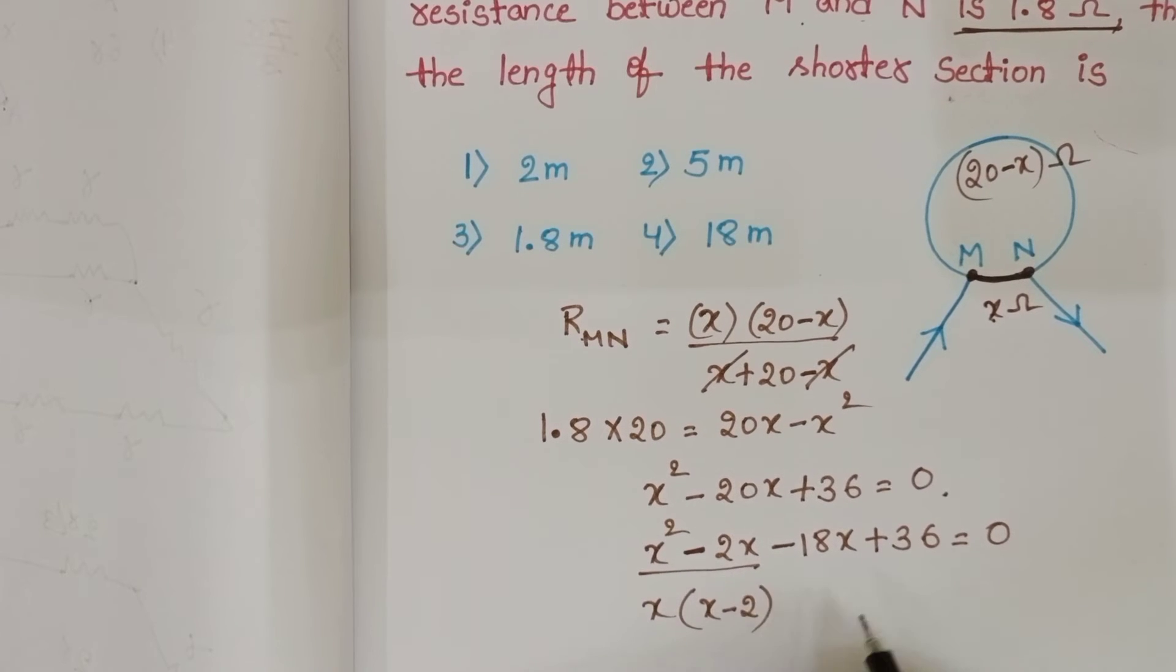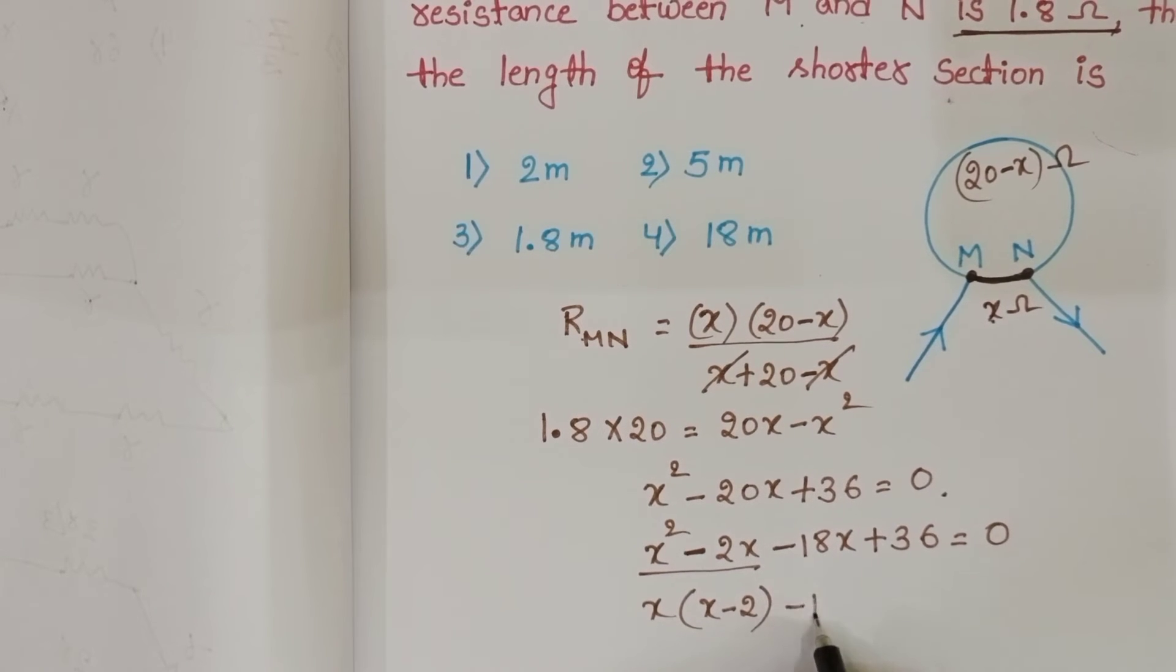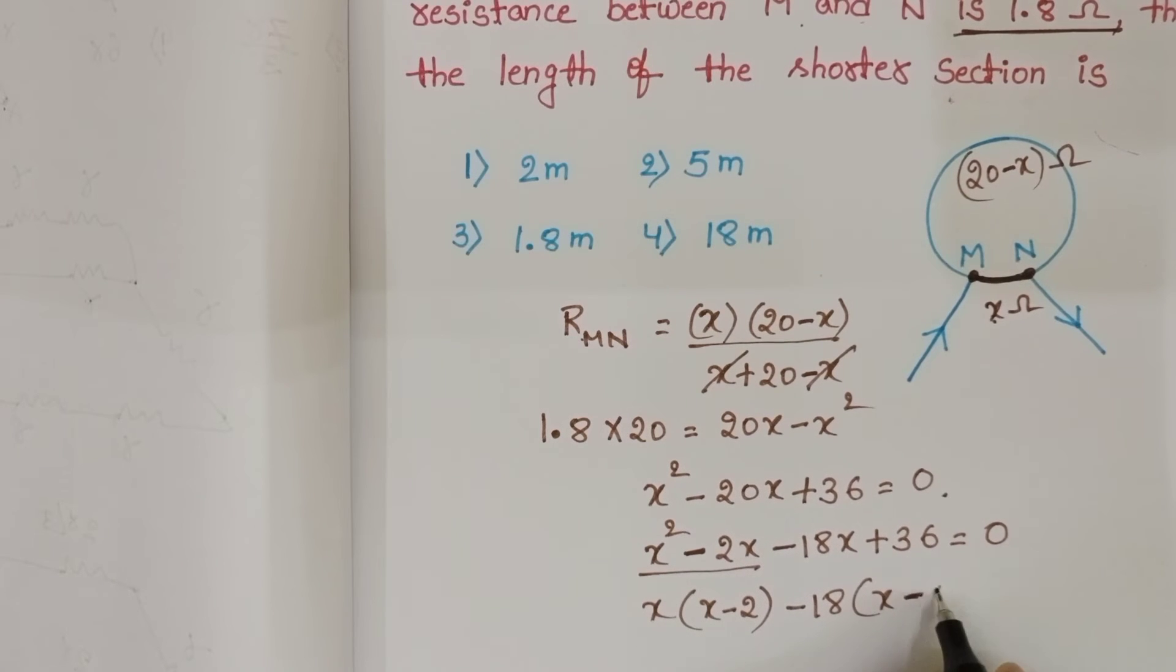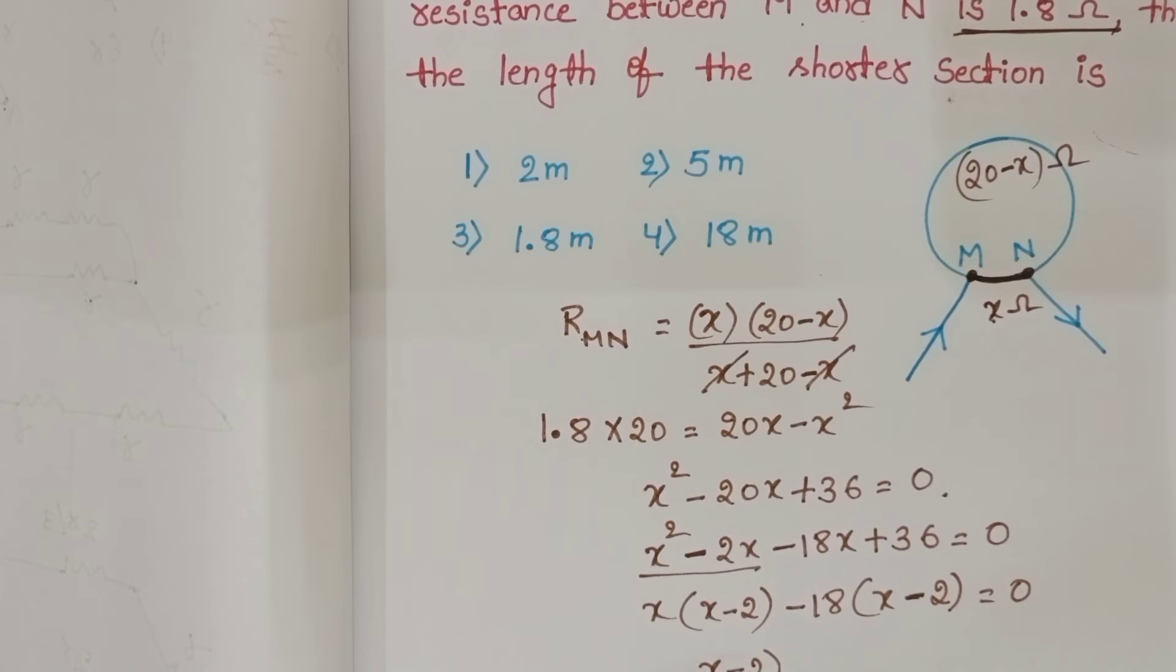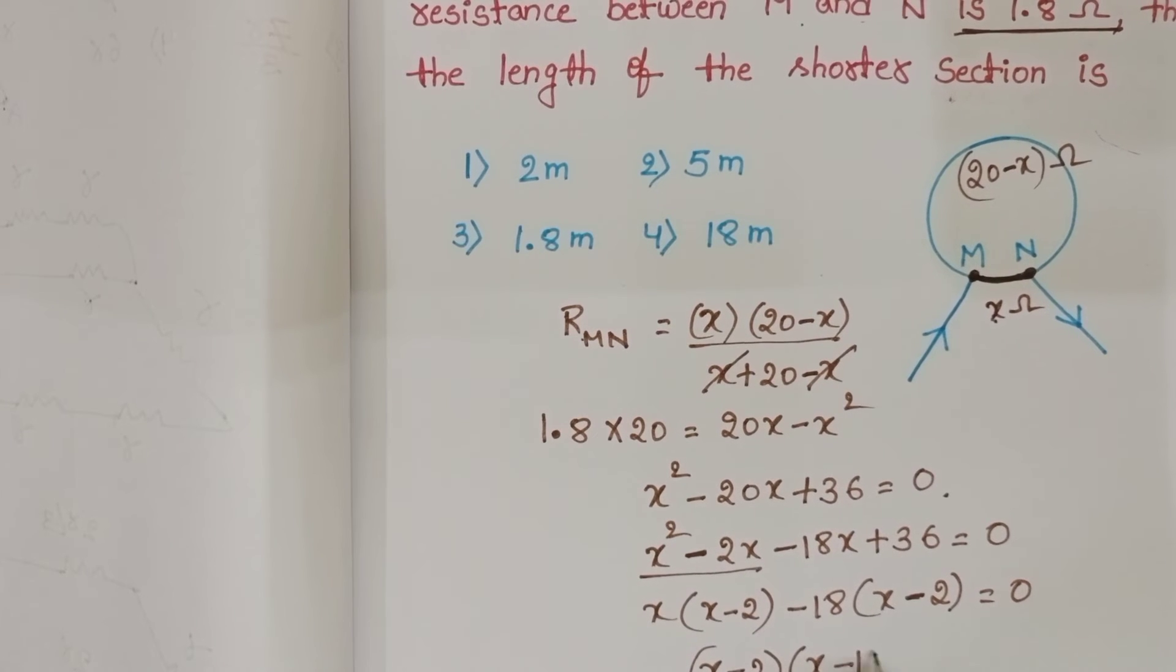X minus 2. Okay, now (X minus 2) times (X minus 18) equals 0.